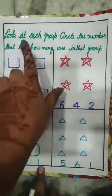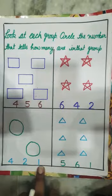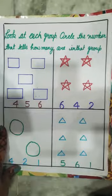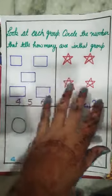So firstly we read the heading. Look at each group. Circle the number that tells how many are in each group. This worksheet is made in four groups. There are four groups in which there are four objects.